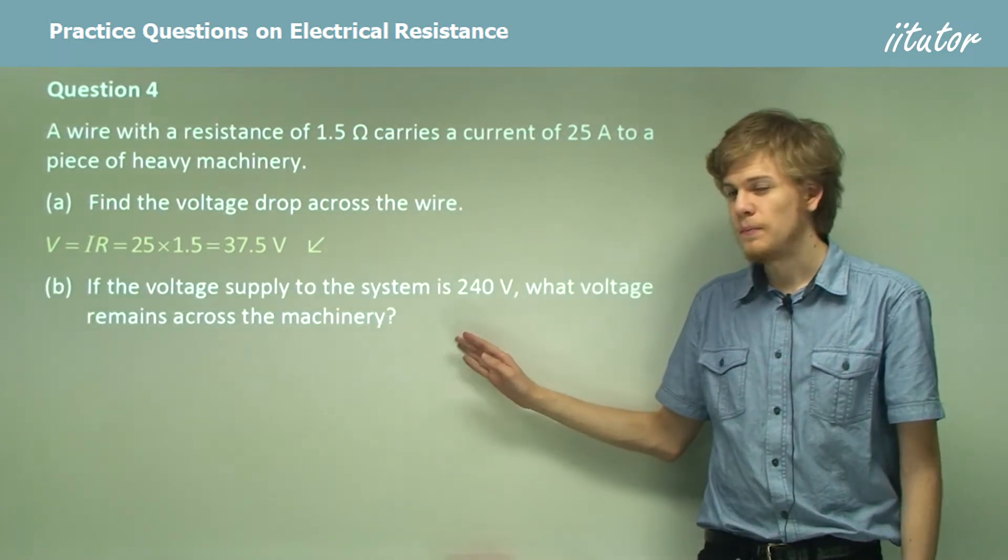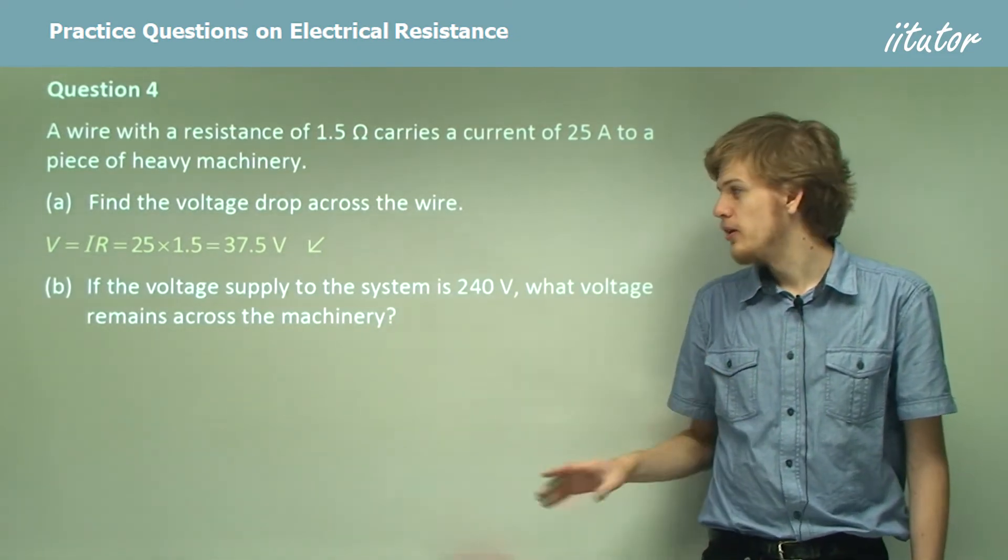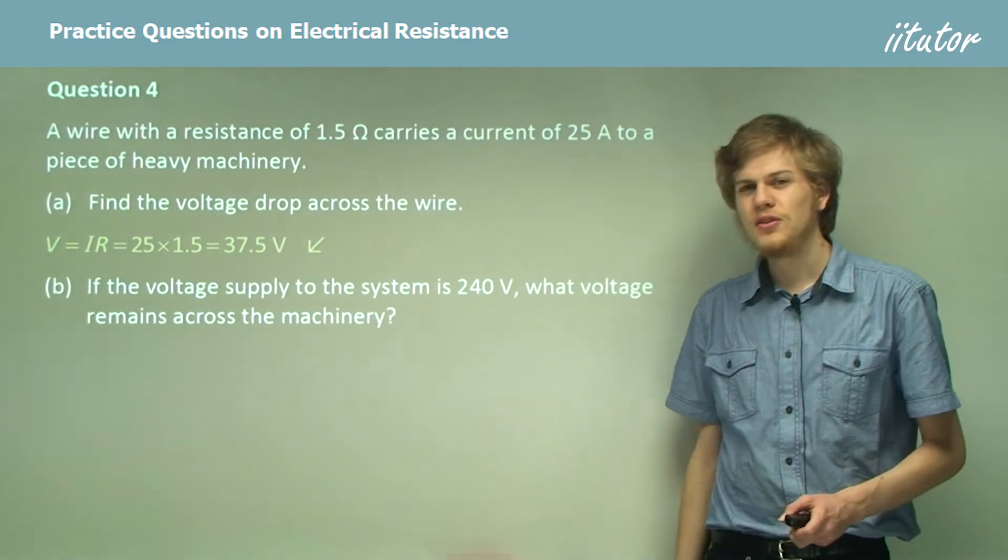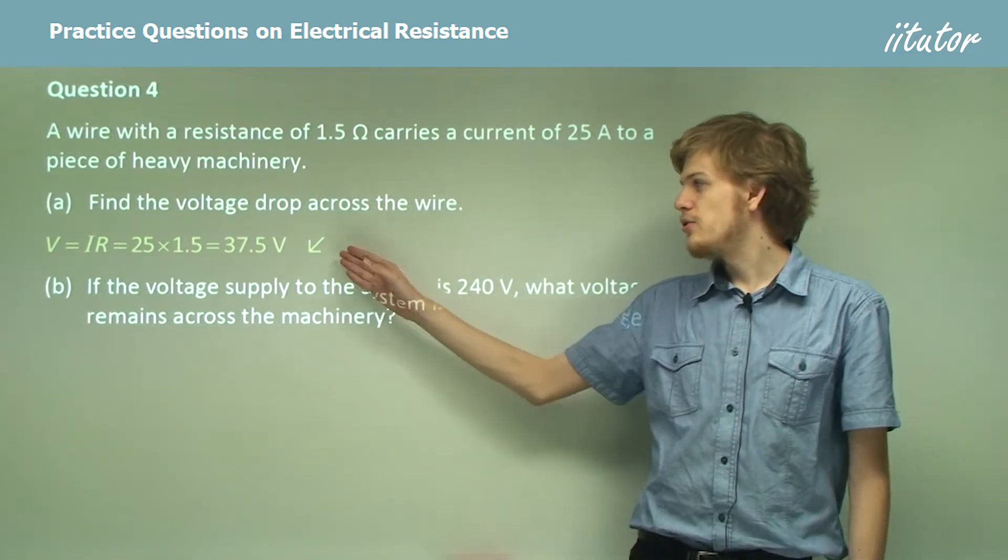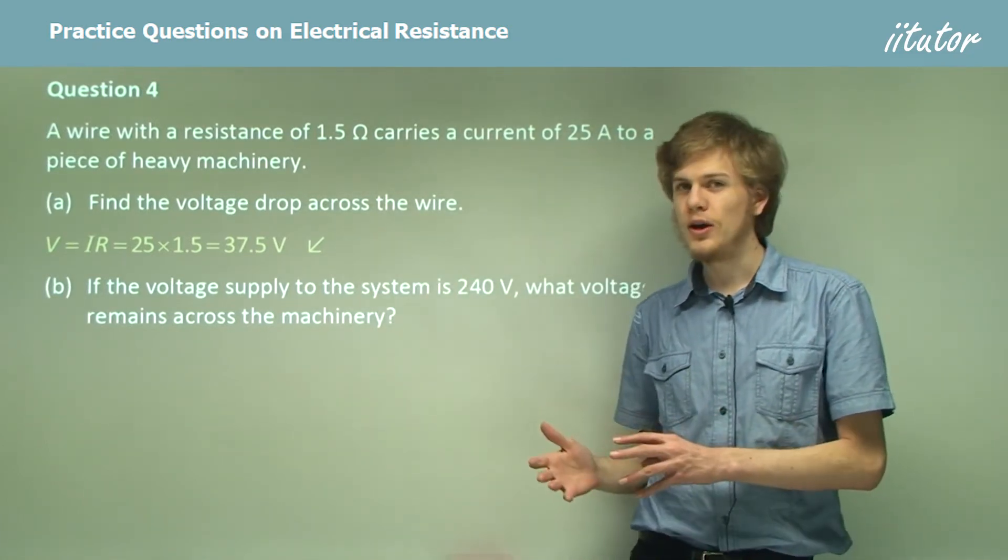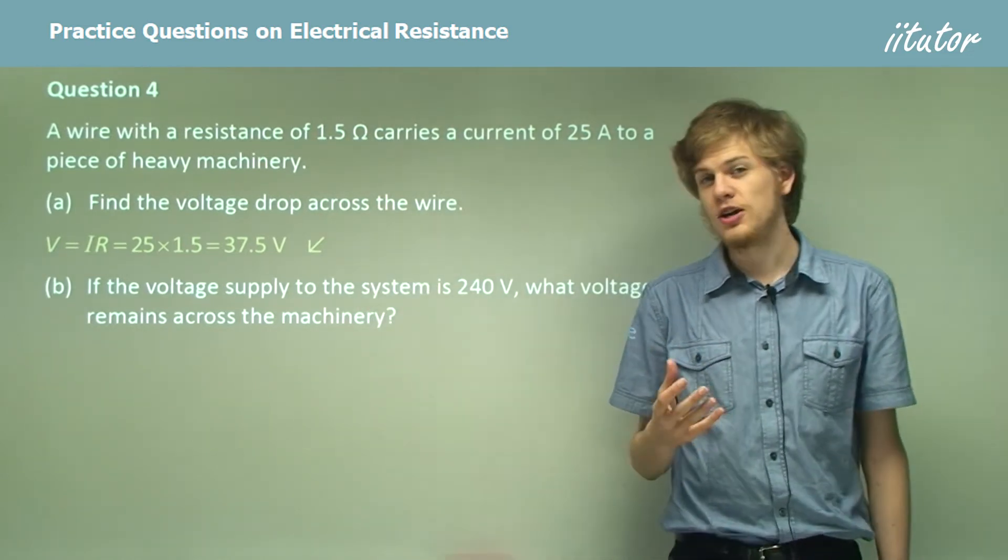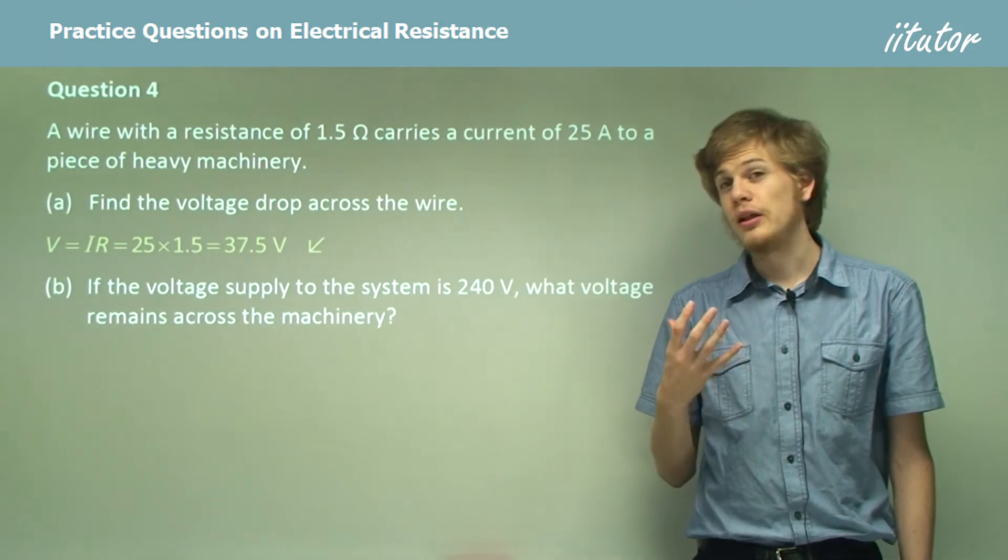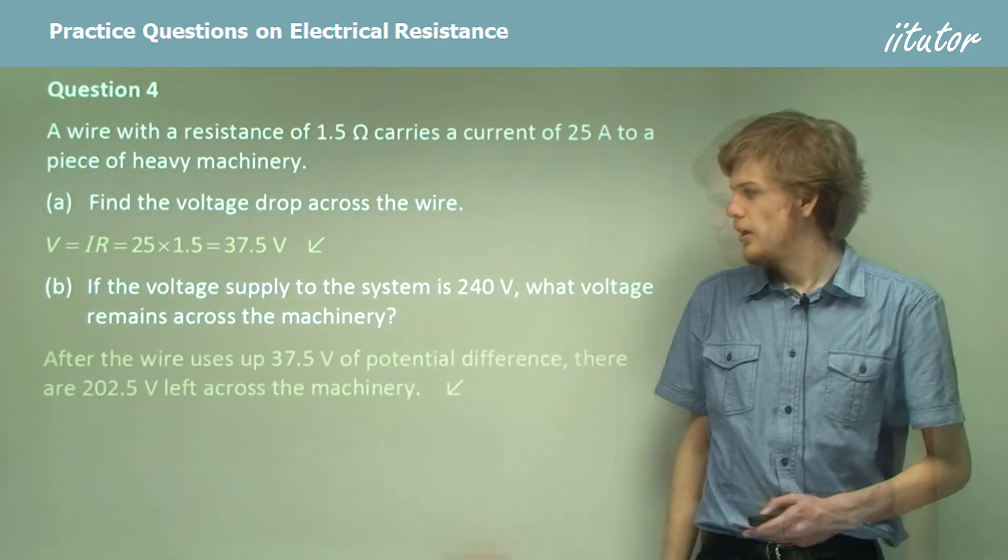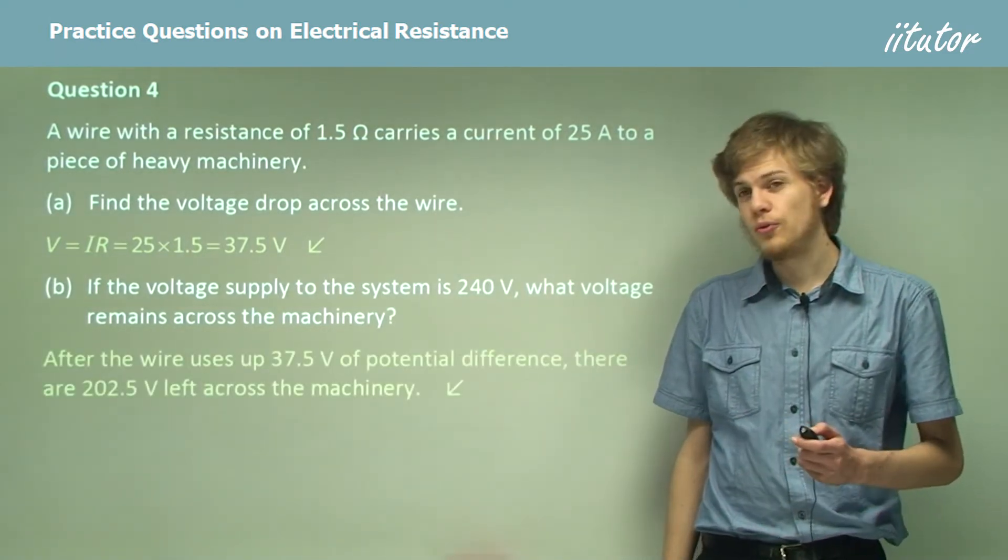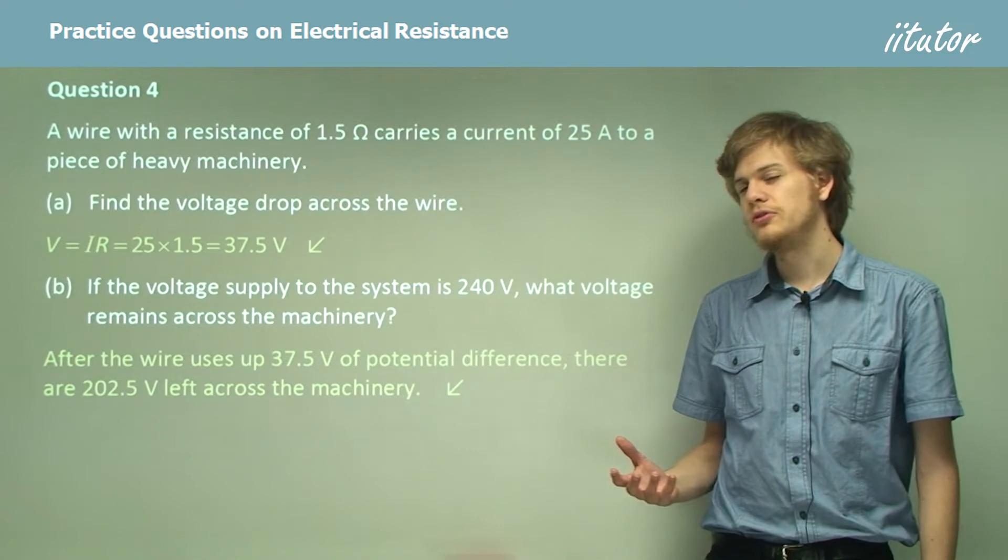Now if the voltage supply to the system is 240 volts, what voltage is left over to supply the machinery? So how do we figure this one out? Well it's going to be the 240 volts we start with minus the 37.5 volts that we lose across the wire. So we lose 37.5 volts worth of potential of the charged particles moving through the wire. The potential they're left with will be 240 volts minus this potential. Our answer will simply be 240 minus 37.5. That means that we have 202.5 volts left to power the machinery.